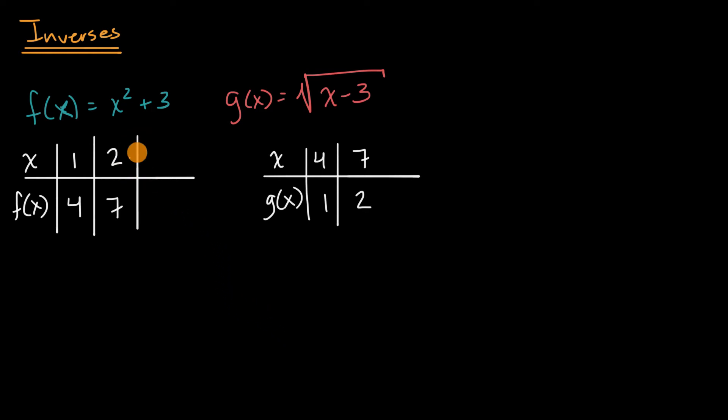So let's do that. Let me put a negative two right over here. Now, if I have negative two squared, that's positive four plus three is seven. So I have seven here. But we already know that when we input seven into g, we don't get negative two, we get two.